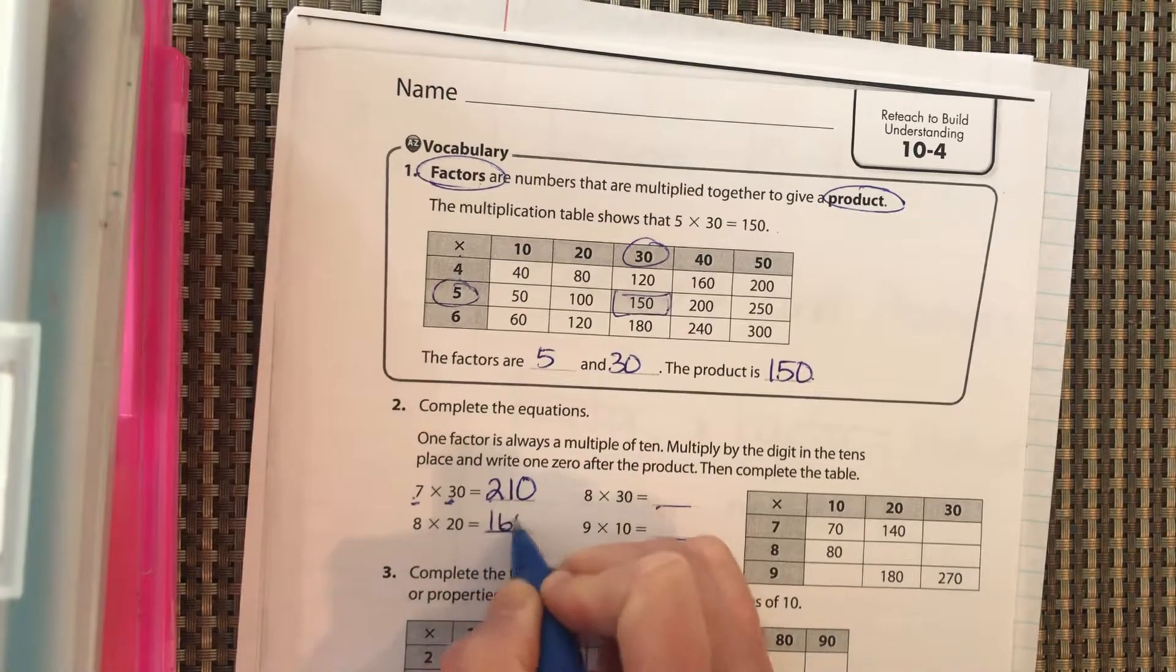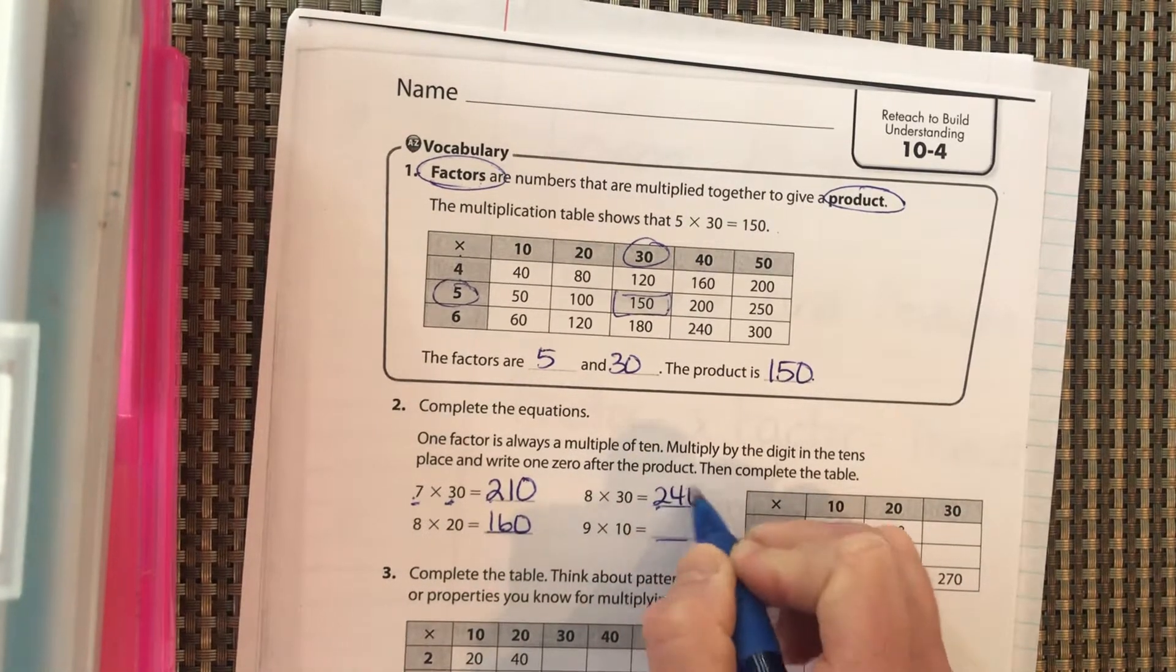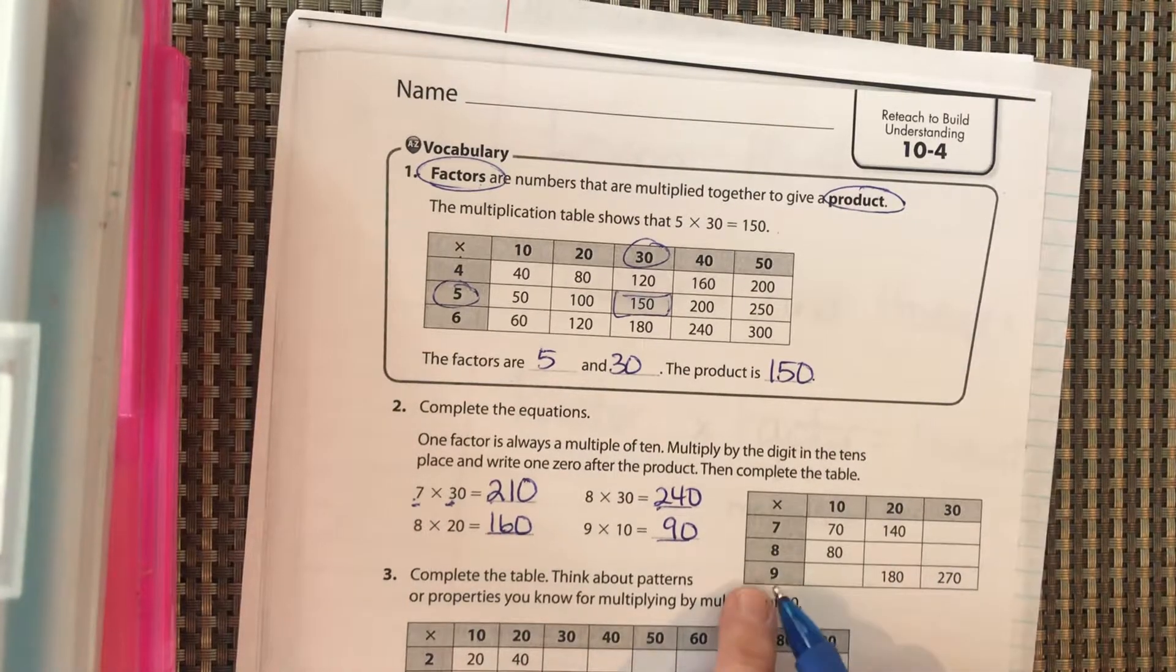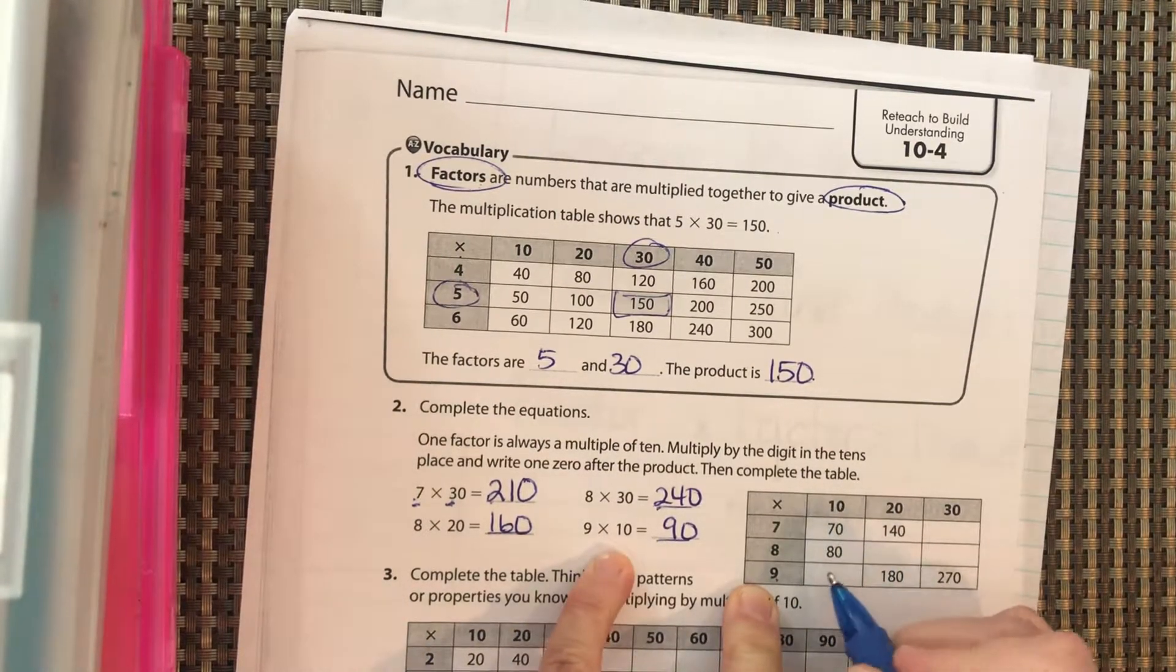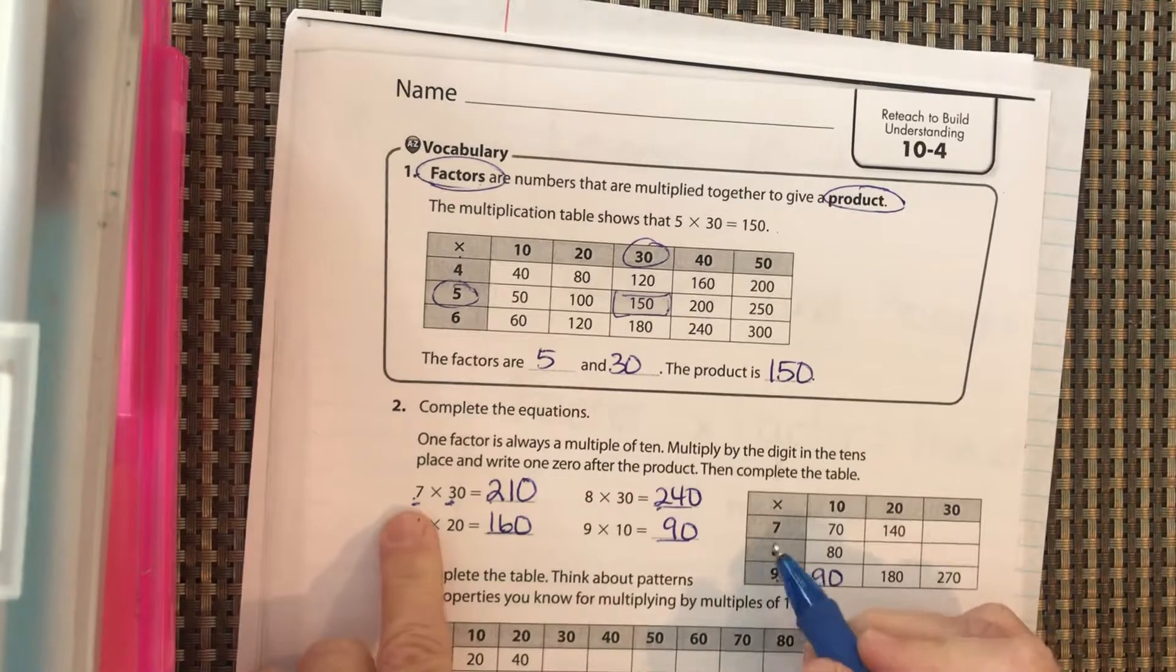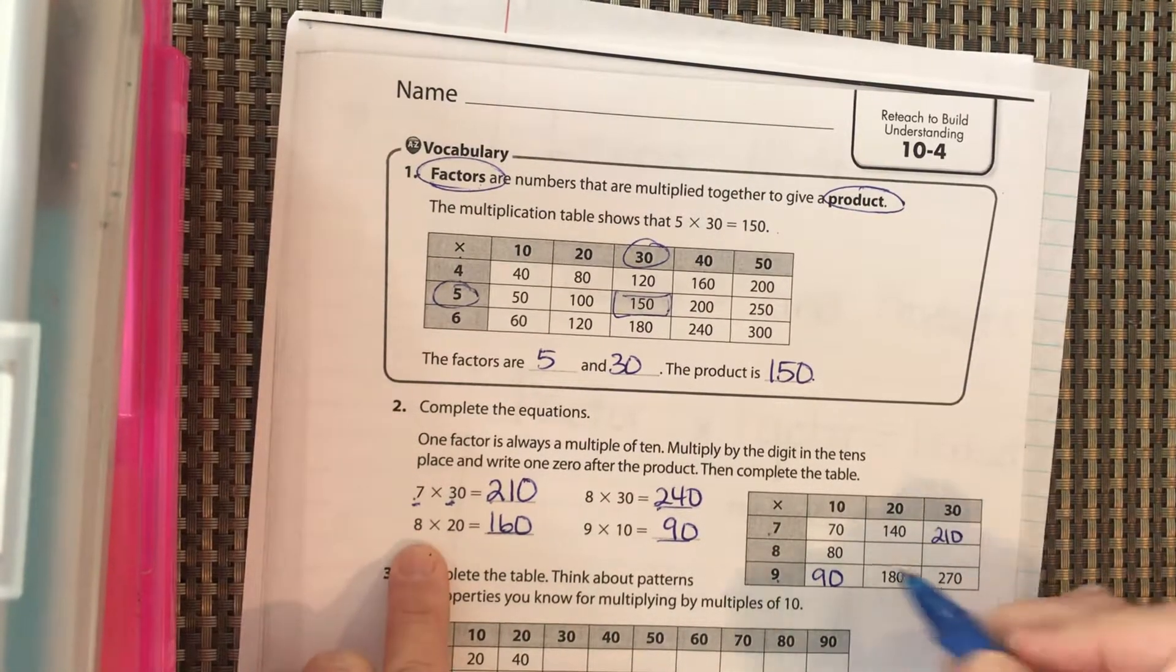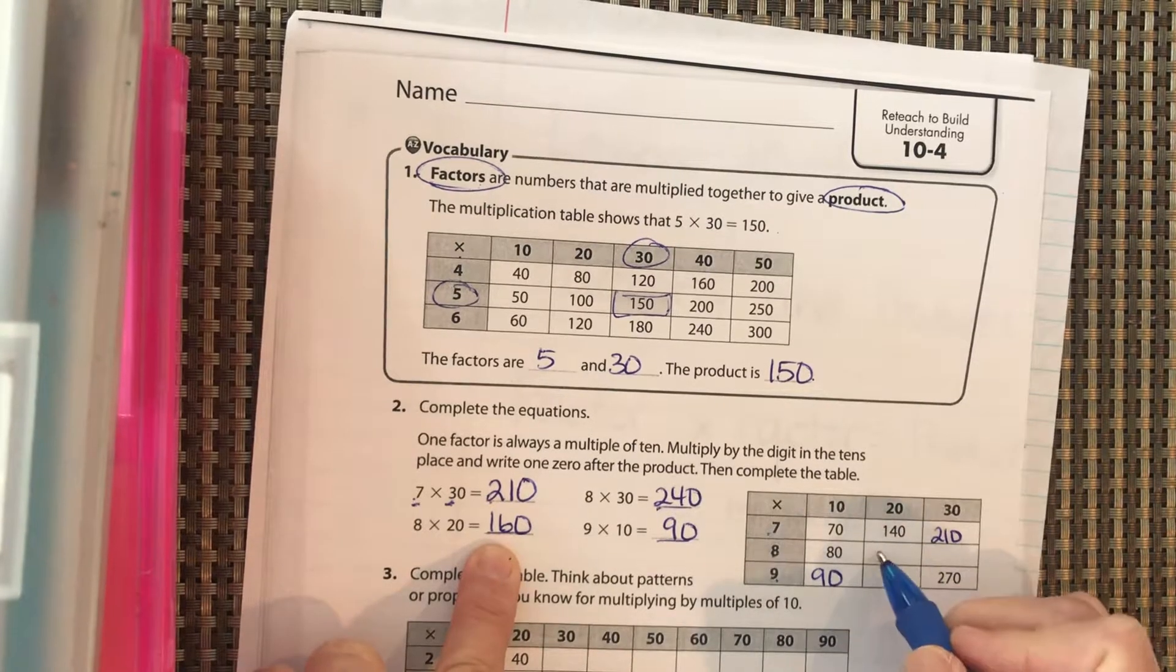Okay, you should get 160, 240, and 90. So now they want us to fill in the table. Okay, nine times 10 is 90, seven times 30 is 210, eight times 20 is 160, and eight times 30 is 240.